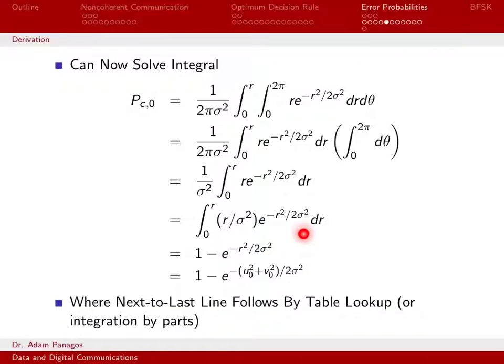This form is very easy to work via parts or table lookup. I used table lookup from the list of calculus integrals posted for the site. Then I substituted back in our relationship between r and U0² and V0². We have simplified this integral quite a bit.